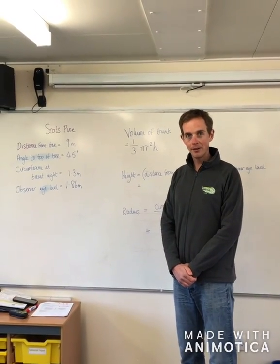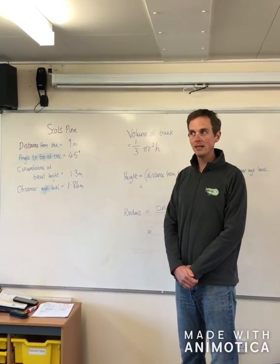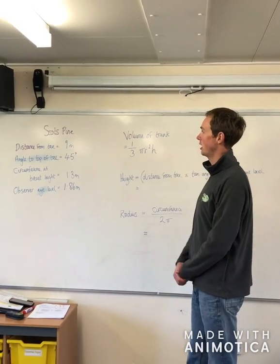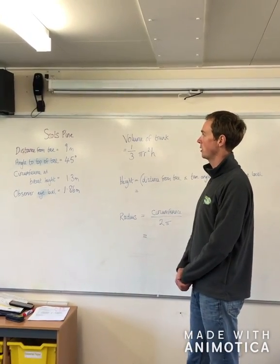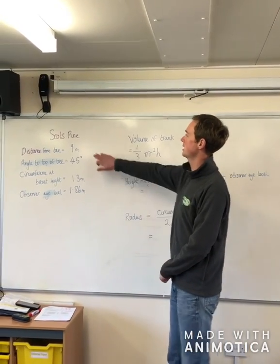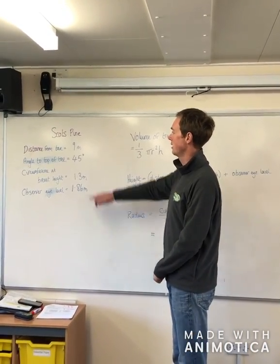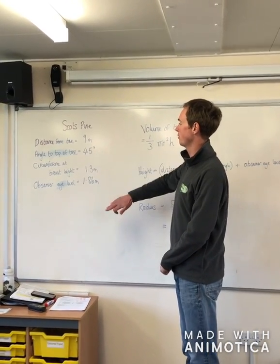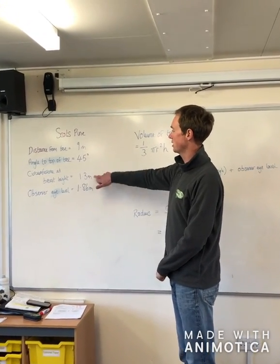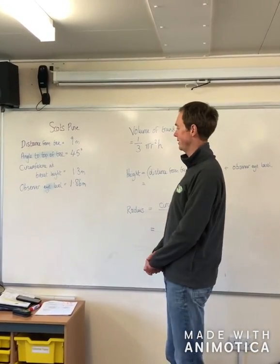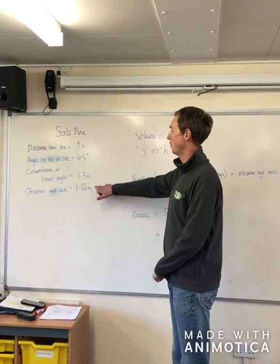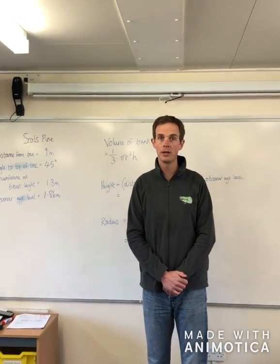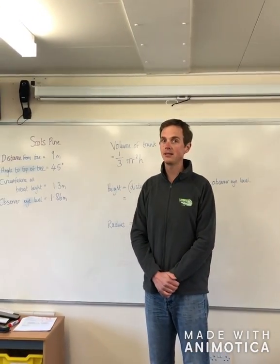So a little bit of maths coming up. We've gone and measured our tree and put the calculations for our Scots pine on the board. We had our distance from the tree being 9 metres, the angle to the top of the tree being 45 degrees, our circumference at breast height was 1.3 metres, and our observer eye level was 1.86 metres.